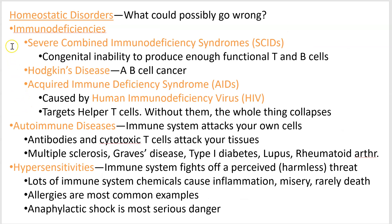What can go wrong? Well, a lot. Here are three things. First, immunodeficiencies — and one example is AIDS. AIDS is the disorder caused by HIV, which is the virus. Just like SARS-CoV-2 is the virus and COVID-19 is the disease, HIV is the virus and AIDS is the disease. What happens is HIV targets your helper T-cells, sending your whole immune system into chaos.